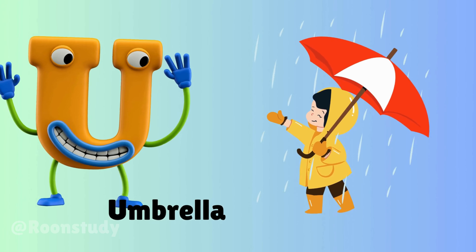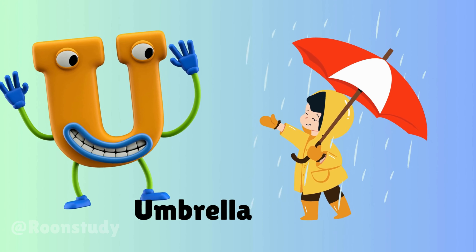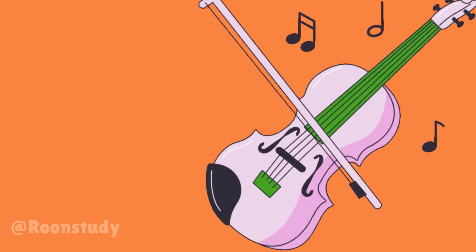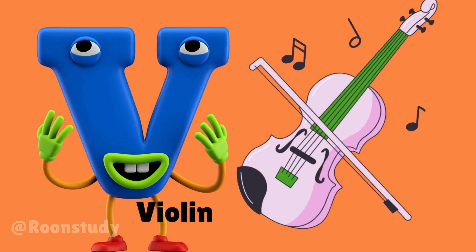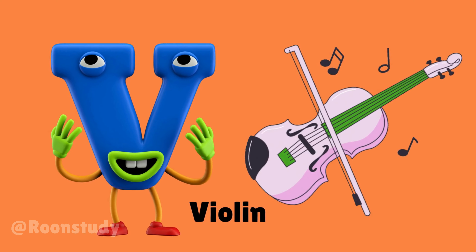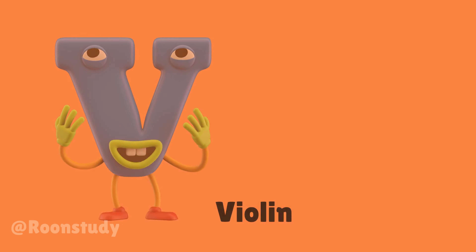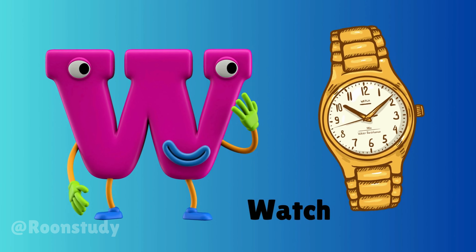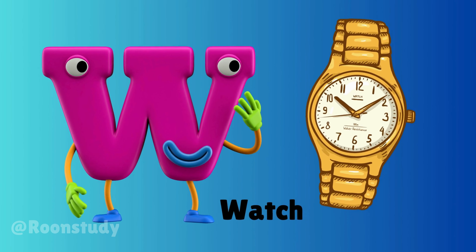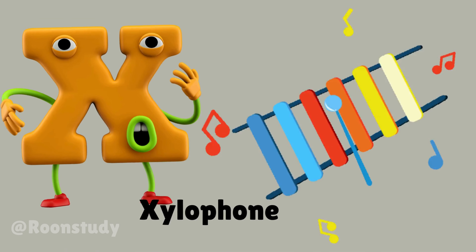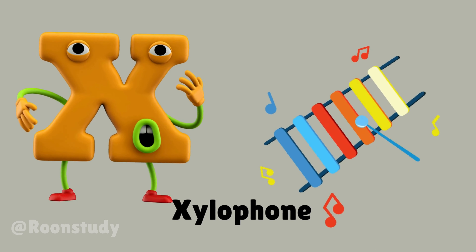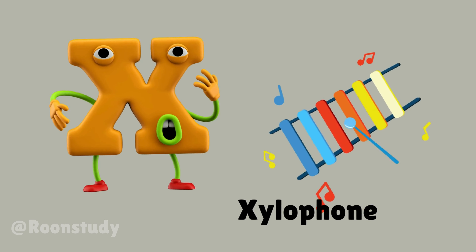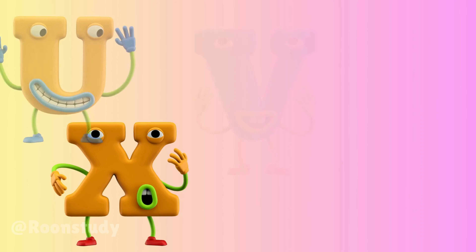U is for umbrella, u-u-umbrella. V is for violin, v-v-violin. W is for watch, w-w-watch. X is for xylophone, x-x-xylophone.